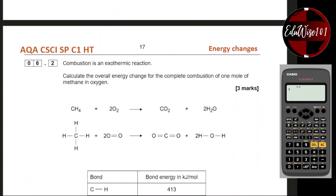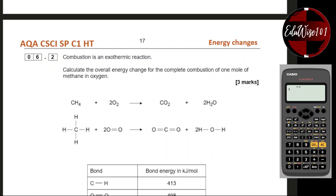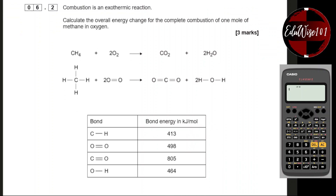Next part, question number 6.2. Combustion is an exothermic reaction. Calculate the overall energy change for the complete combustion of one mole of methane in oxygen. The symbol equation is CH₄ + 2O₂ → CO₂ + 2H₂O — it's already a balanced equation. They have given you the structural formula of methane, oxygen, carbon dioxide, and water, along with the bond energies.